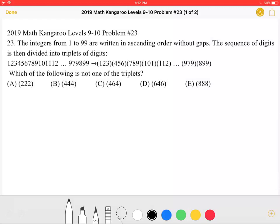This is the 2019 Math Kangaroo levels 9 and 10, problem number 23. The integers from 1 to 99 are written in ascending order without gaps. The sequence of digits is then divided into triplets of digits. Which of the following is not one of the triplets?